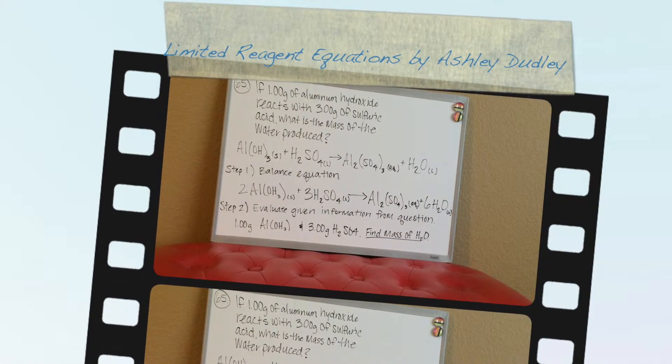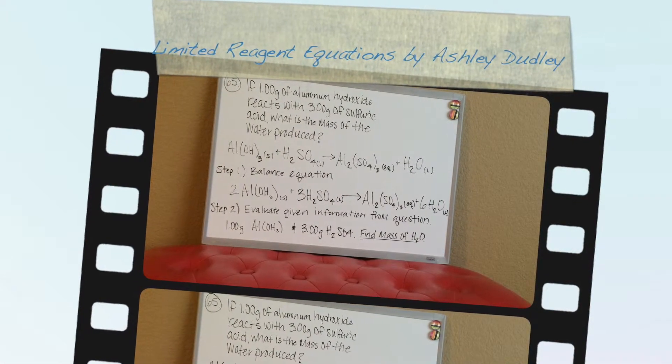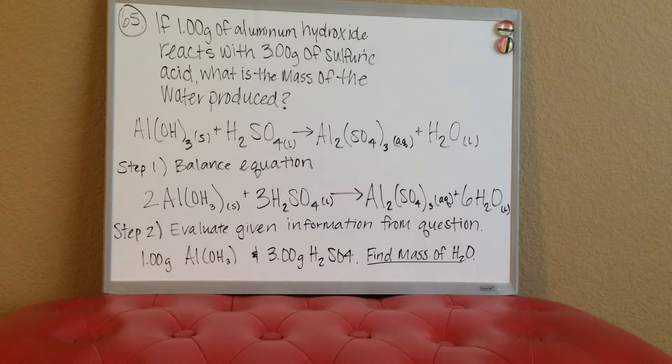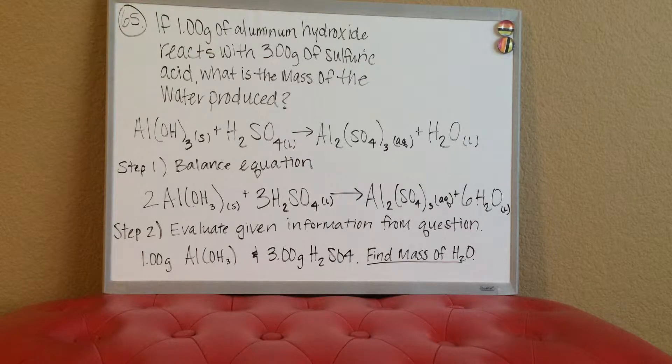Hi, I'm Ashley. I'm going to talk about problem number 65. The question is: if you have one gram of aluminum hydroxide and it reacts with three grams of sulfuric acid, what is the mass of the water produced?